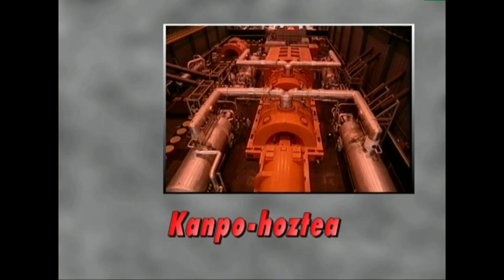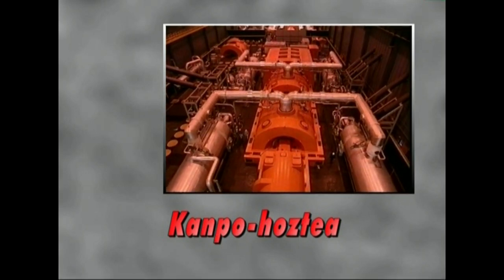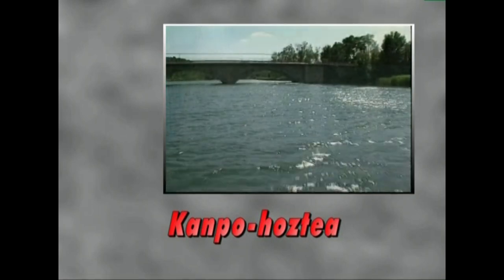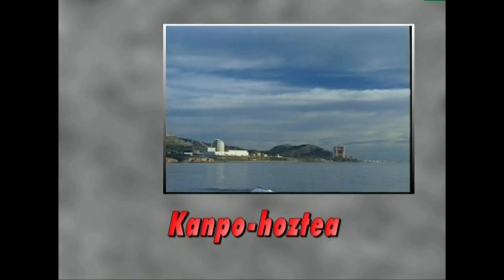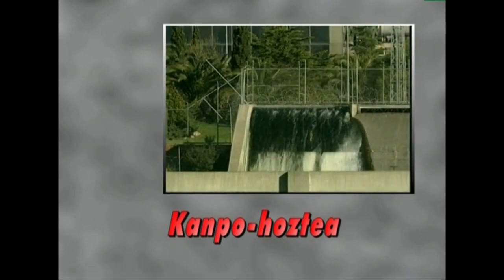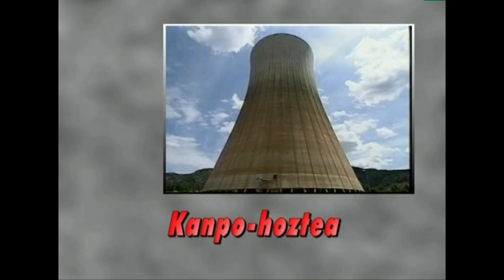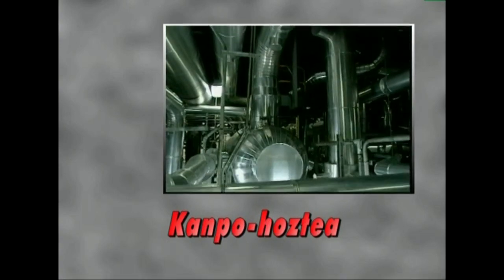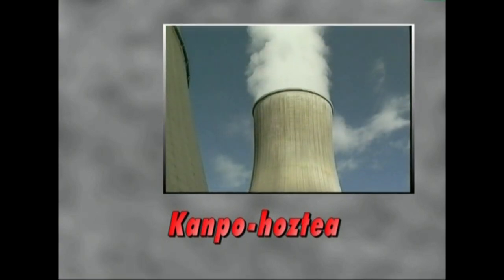Termodinamikaren legeek mugatzen duten ez, beroa energia elektriko bihurtzean, beroaren parte bat baino ezta energia baliagarri izatera iristen. Zirkuitu irekiko oste sistemetan, bero energia kondentsadorearen barnetik zirkulatzen duen itxaso, aintzira, edo ibaiko urari transferitzen zaio. Zirkuitu itxiko oste sistemetan berriz, ur berbera iragaten da etengabe kondentsadoretik, eta ur horrek surgatzen duen beroa, aireari transferitzen zaio azkenean, osteko dorren bidez.